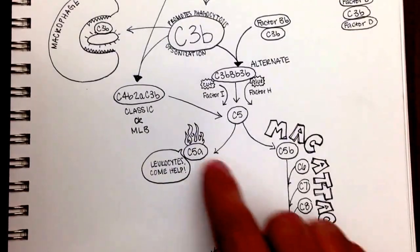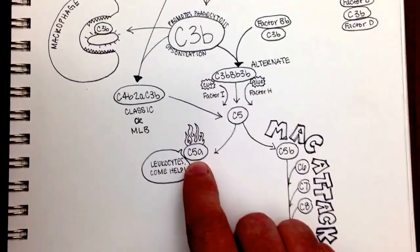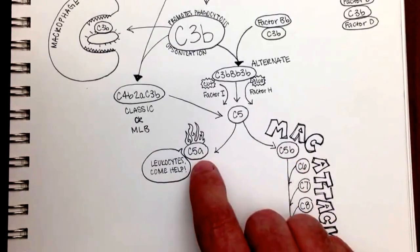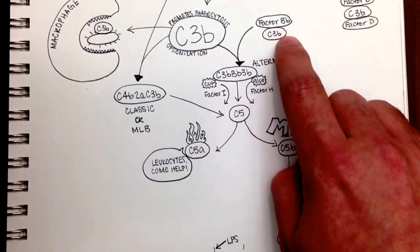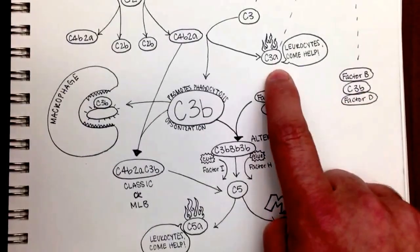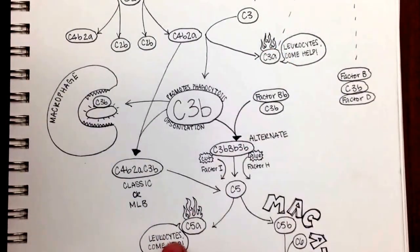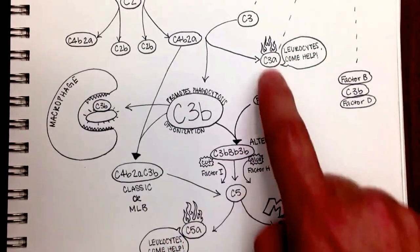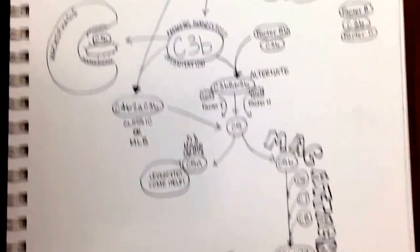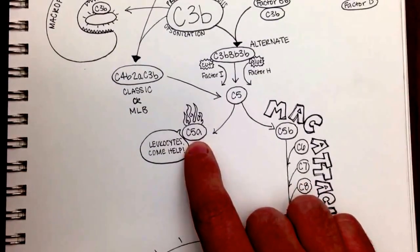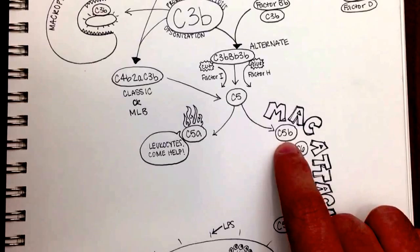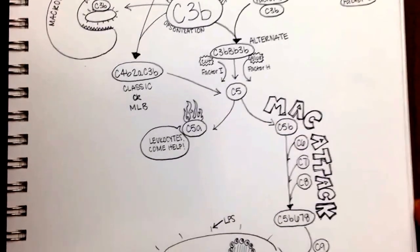So what happens when we cut a C5? We get a C5a, the little piece, and the C5b. The C5a, similar to the C3a up here, is a signal for inflammation and a signal for leukocytes. We have our flames and we have our leukocytes. But the more important part is not the C5a, it's the C5b, which initiates the MAC attack complex.